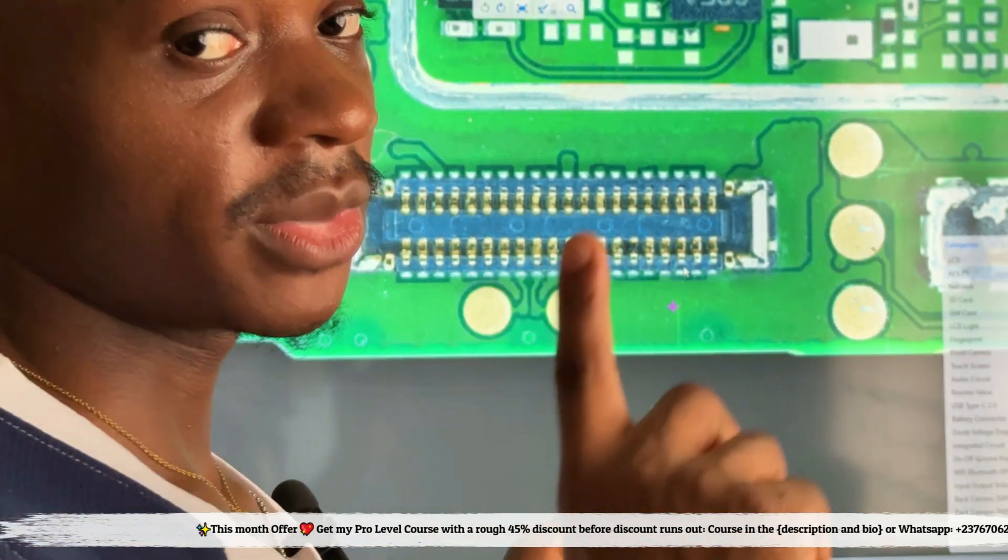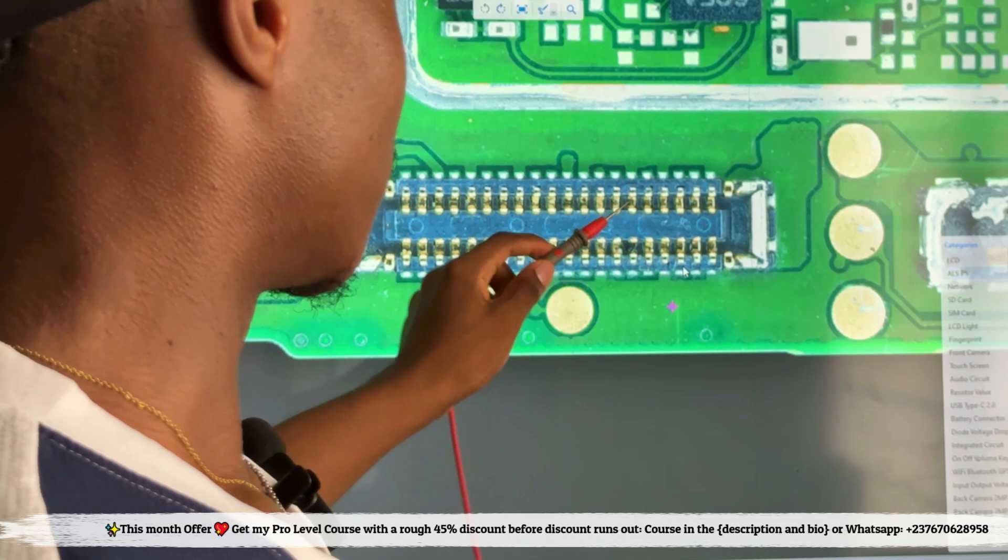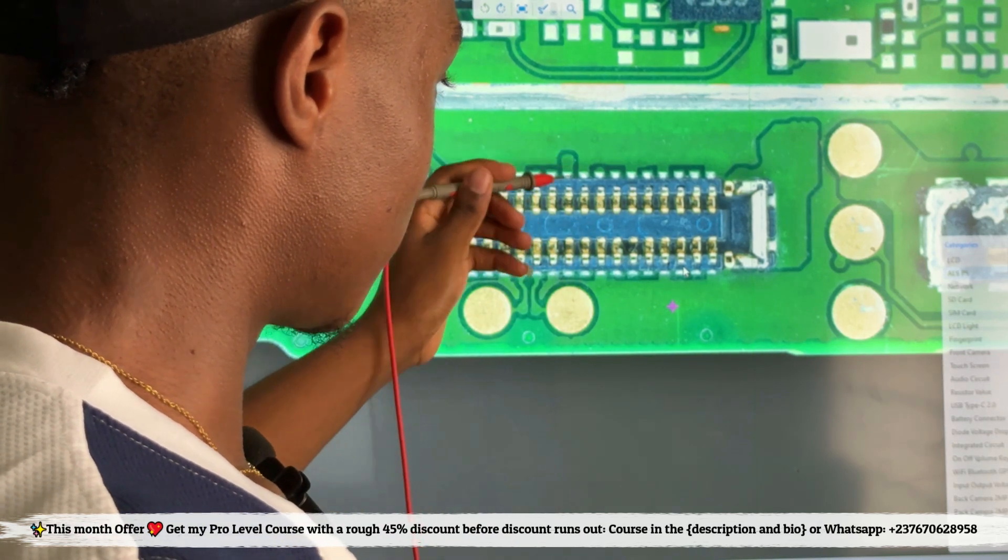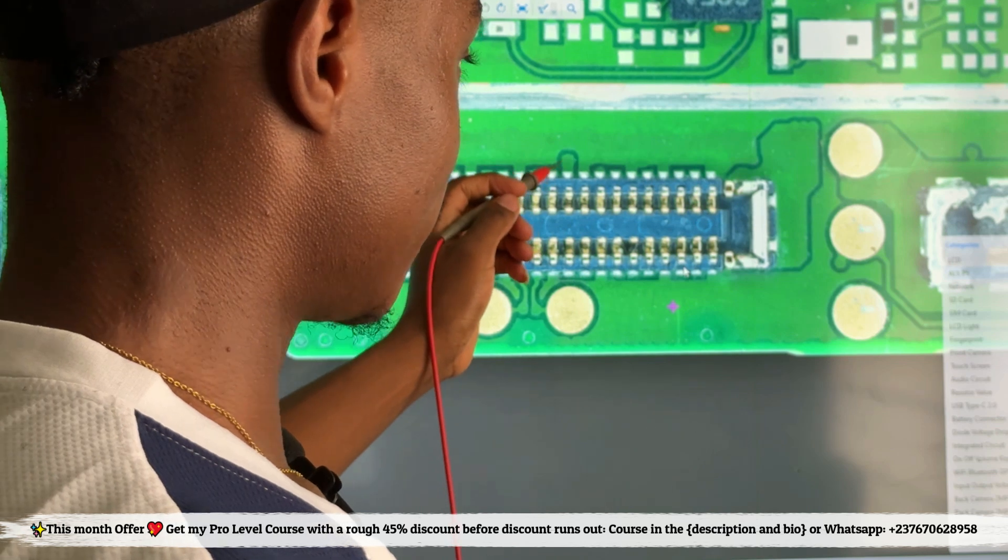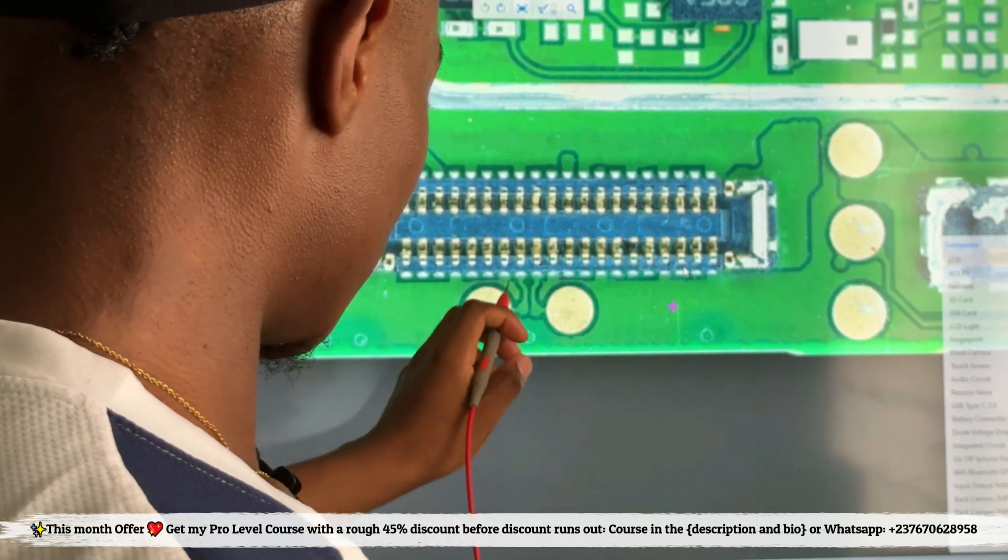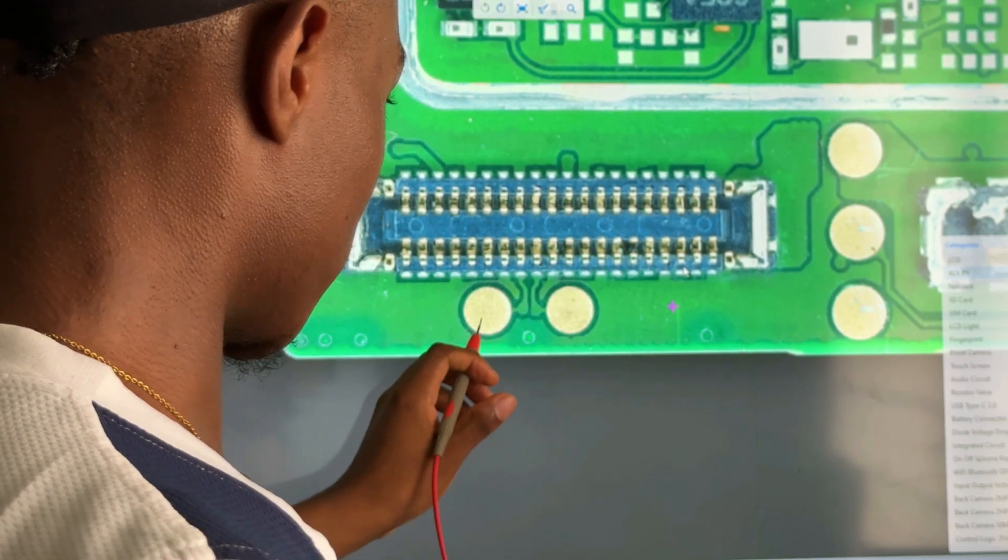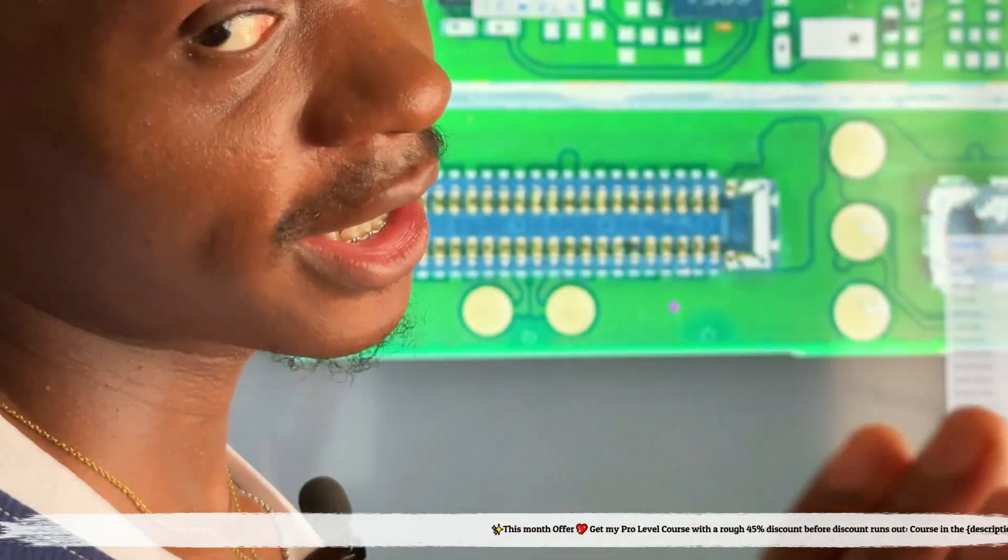For these smaller ones you can see we have small tracks here, which means that if it peels off from here you can scrape this place using your blade then jumper a cable. For these two ones you can see they have some jumper points here, and just like that, very simple.